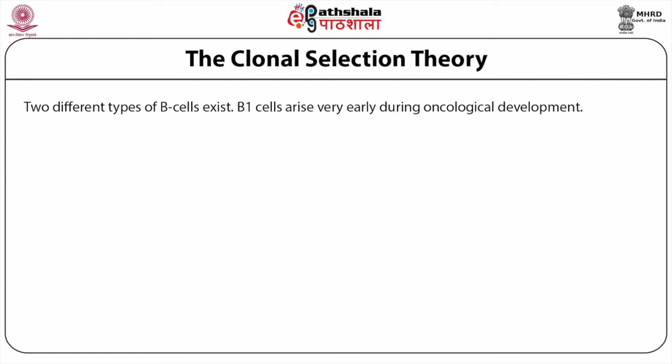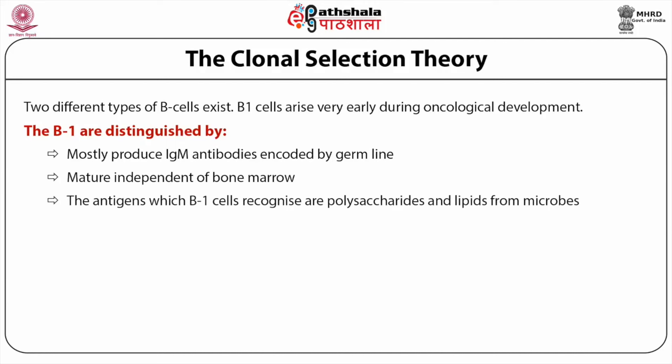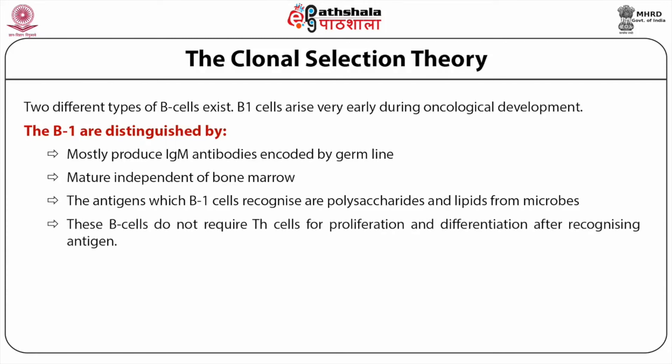Two different types of B cells exist. B1 cells arise very early during ontological development and are distinguished by the fact that they mostly produce IgM antibodies encoded by germline. They mature independent of bone marrow. The antigens which B1 cells recognize are polysaccharides and lipids from microbes. These B cells do not require T cells for proliferation and differentiation after recognizing antigen. Whenever one talks of B cells, unless otherwise mentioned, the reference is generally to B2 type cells.